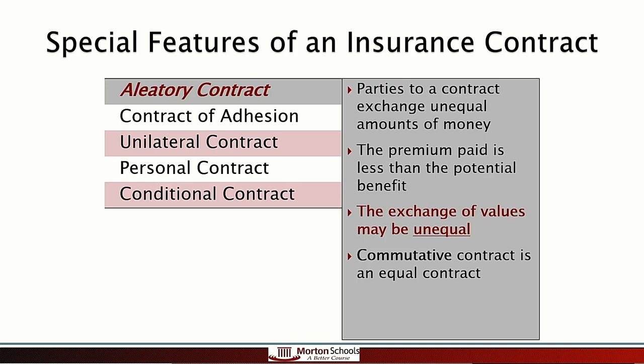The opposite of an aleatory contract is a commutative contract — a normal contract where both parties exchange equal amounts, like a contract to buy a house or a car. But an insurance policy is an aleatory contract: an unequal exchange of values.